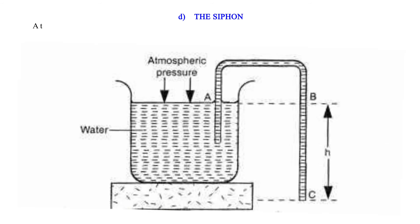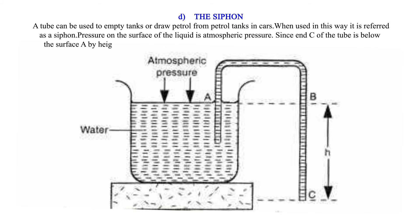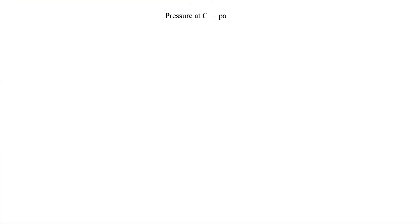The siphon: A tube can be used to empty tanks or draw petrol from petrol tanks in cars. Used in this way, it is referred to as a siphon. Pressure on the surface of the liquid is atmospheric pressure. Since end C of the tube is below the surface A by height H, pressure at C is greater than that at the surface. The tube is first filled with the liquid, after which it will continue to run so long as C is below the liquid surface. Pressure at C equals P_A plus H·ρ·g.